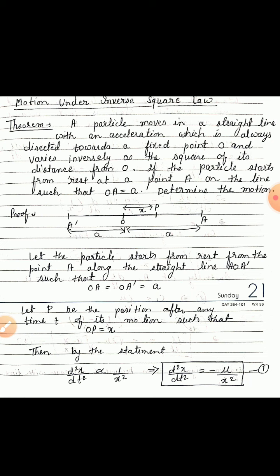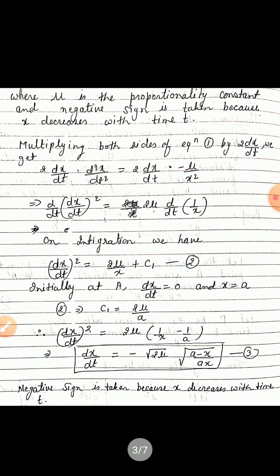If the particle starts from rest at a point A on the line such that OA equals small a, we have to determine the motion. Let the particle start from rest from point A along the straight line AOA' such that OA equals OA' equals small a. Let P be the position of the particle after any time t such that OP equals x. Then by the statement of the theorem, acceleration varies inversely as the square of its distance from O, so we get d²x/dt² is proportional to 1/x².